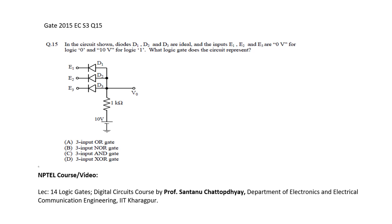This question is from GATE 2015 Session 3 EC paper. In the circuit shown, diodes D1, D2, D3 are ideal and the inputs E1, E2, E3 are 0 volts for logic 0 and 10 volts for logic 1. What logic gate does the circuit represent?